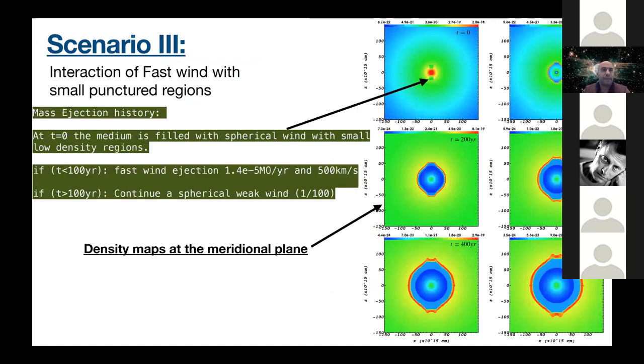Let's move to the third scenario. It's interaction of fast wind with small punctured region. So the mass ejection history is at t equals zero, the medium is filled with spherical wind with small low density regions. At the first 100 year, a fast wind ejection of 1.4 times 10 to the minus 5 solar mass per year, and 500 kilometers per second. And at t longer than 100 year, we continue a spherical wind with 1 of the 100 previously ejected density. So as you can see here, we have the grid filled with a regular wind. I choose here and here to have small punctured regions. And then I inject the spherical wind.